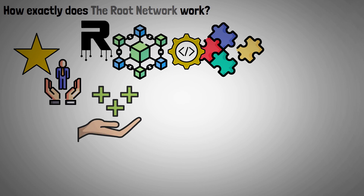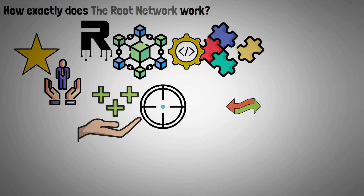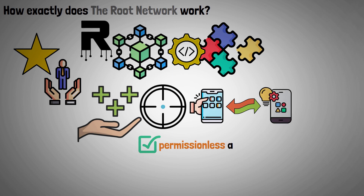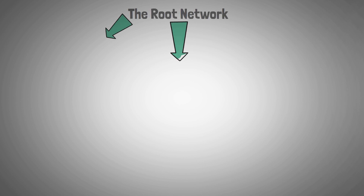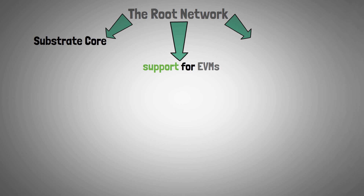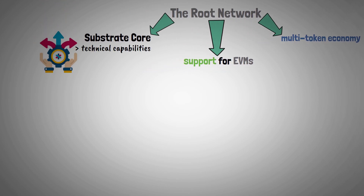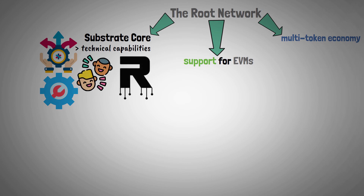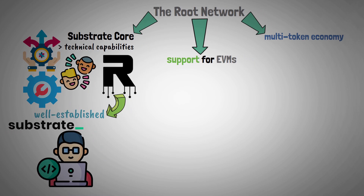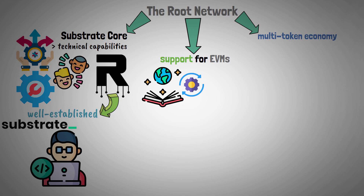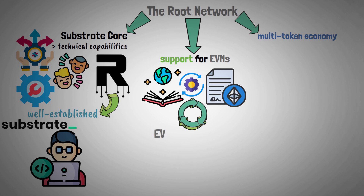Among its many advantages, the Root Network aims to facilitate seamless movement between applications and enabling permissionless asset transfer. The Root Network depends on three main components to accomplish these objectives: Substrate Core, support for Ethereum Virtual Machines, and a multi-token economy. Substrate's technical capabilities provide essential flexibility and customization for the best possible user experience, and the Root Network also intends to take advantage of the well-established developer community on the substrate network. The protocol can read and run Solidity smart contracts, thanks to integrated EVM compatibility.